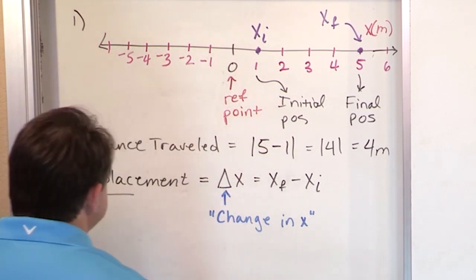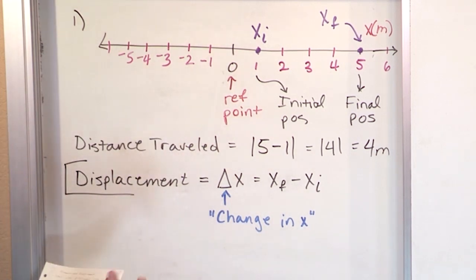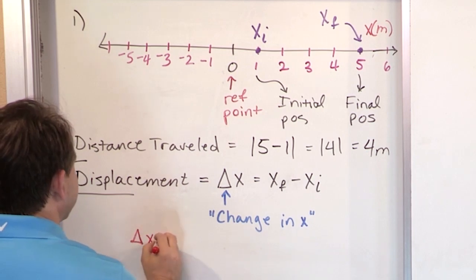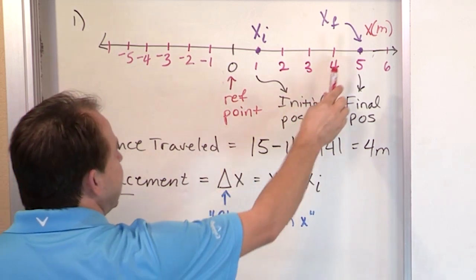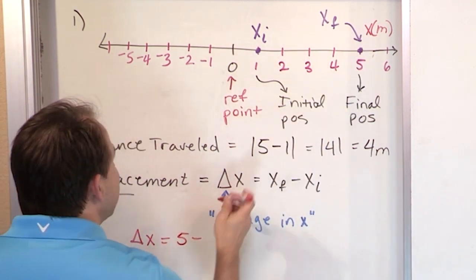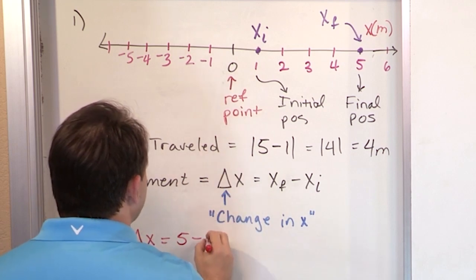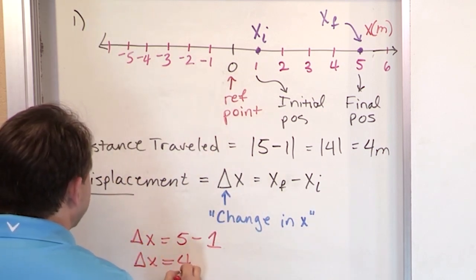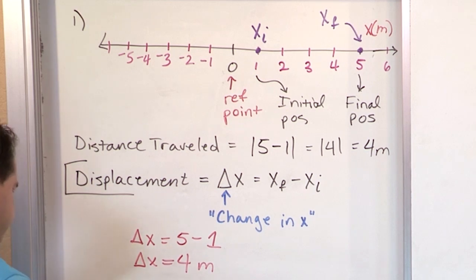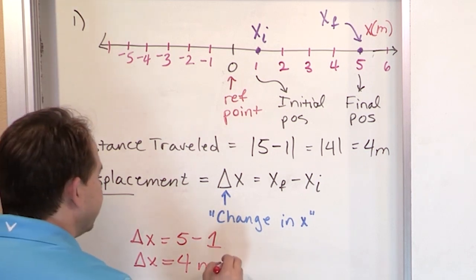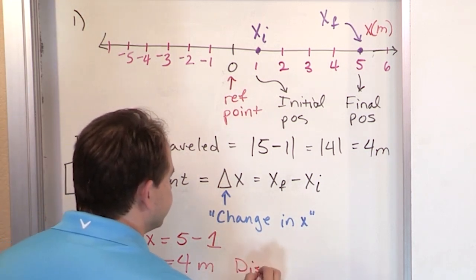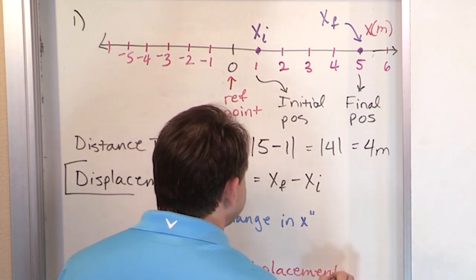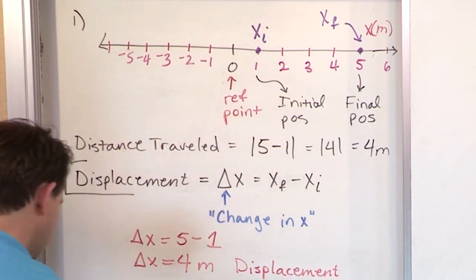So in this particular problem, what is the displacement? Delta X — the final value is five minus the initial value of one. So Delta X is equal to four meters. This is the displacement.